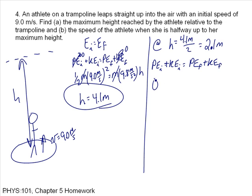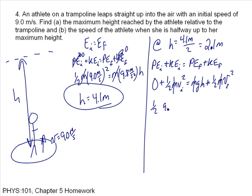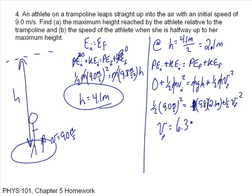So: 0 plus one-half mv² equals mgh plus one-half mv-f squared. The masses cancel. Plugging in: one-half times (9.0 m/s)² equals 9.8 m/s² times 2.1 meters plus one-half vf squared. Solving for vf gives 6.3 meters per second. That's the speed at the halfway point.